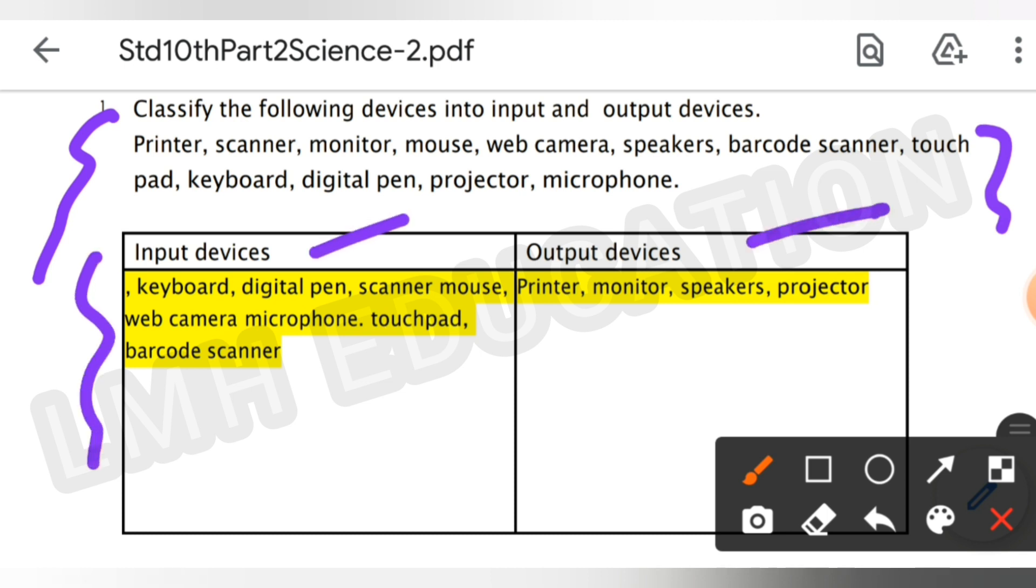So here are the names of the input devices: keyboard, digital pen, scanner, mouse, webcam, microphone, touchpad, barcode scanner. And here are the output devices: printer, monitor, speakers, projector.